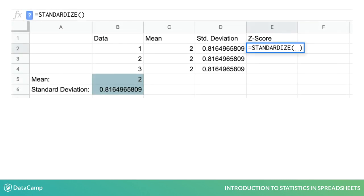In the standardized formula, you need to pass in the data point, the mean, and the standard deviation as shown here.